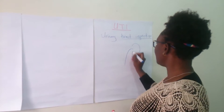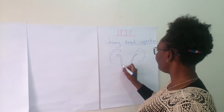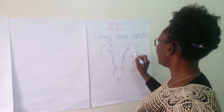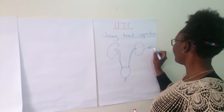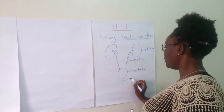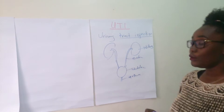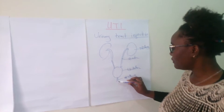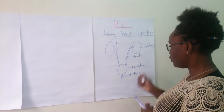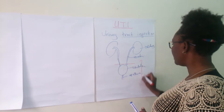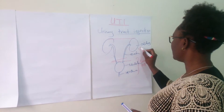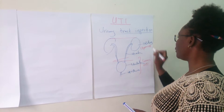So, basically, these are the kidneys. And then: kidney, ureter, bladder, urethra. Infection of all this is Urinary Tract Infection. If the infection is from the bladder to the urethra, this is called Lower UTI. If it's from the ureter up to the kidneys, then this is called Upper Urinary Tract Infection — Upper UTI.